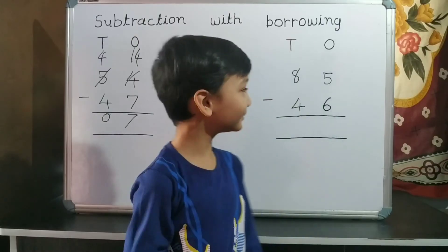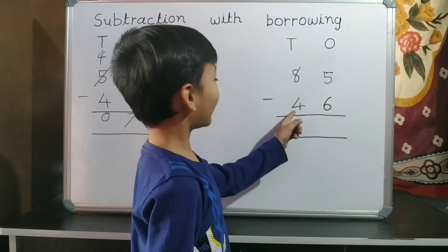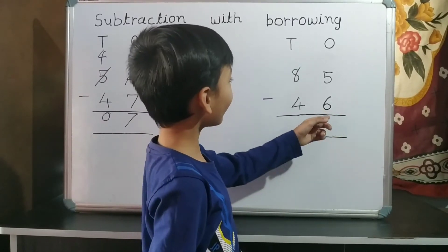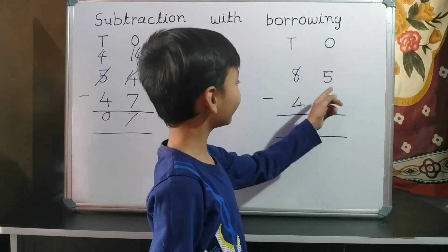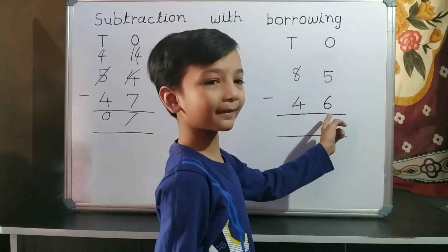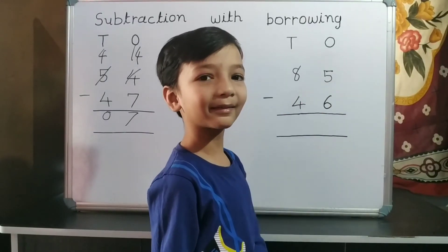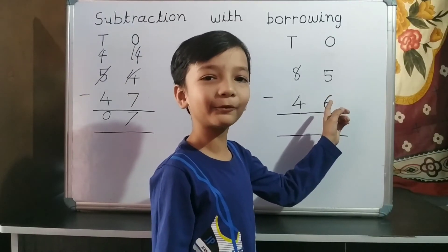4th sum. 85 minus 46. First, we do subtraction of 1's place. 5 minus 6. 5 is smaller than 6, so we cannot subtract 6 from 5.